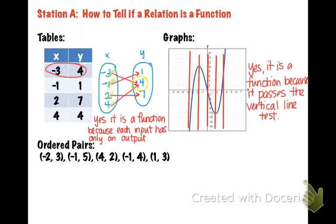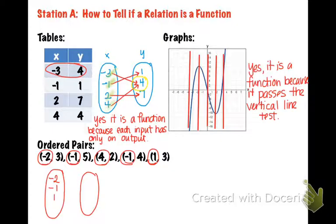With ordered pairs, the idea is exactly the same as looking at a table. Again, I suggest doing a mapping diagram. Remember that the first bubble stands for all of the x's. So we look at x's first: negative two, negative one, four, negative one, and one. Again, don't repeat any of them, and you should always write them least to greatest. So the smallest number is negative two, then negative one, then positive one, then four.